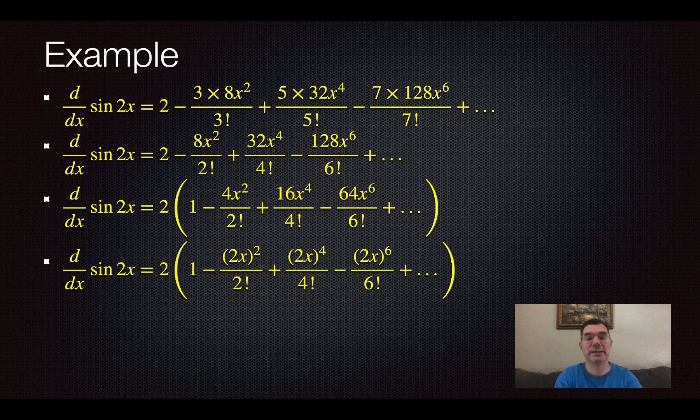And so what I notice is I can rewrite the numerators inside the parentheses of the second, third, and fourth term. I'm rewriting 4x² as (2x)², 16x⁴ as (2x)⁴, 64x⁶ as (2x)⁶. So what I'm noticing is I've got a 2x in every numerator and it's being raised to an even exponent, which is behaving a lot like cos x does.